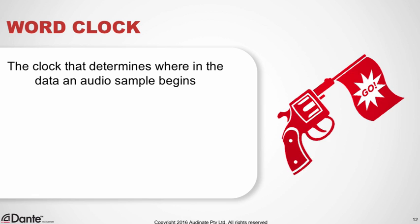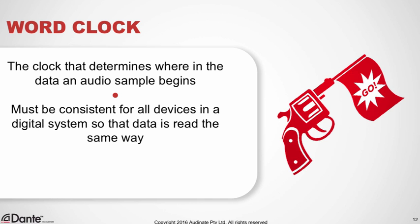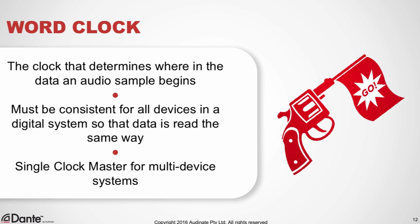The word clock is the clock that determines how data is interpreted in a digital system. Once audio has been sampled and is represented as a series of digital values in time, we need to make sure that all the devices in our system agree about how to read those values in time. They need to agree about when each sample begins in that stream of ones and zeros so that the values can be faithfully converted back into analog signals. For this reason, digital systems always rely upon a single clock master as a point of reference.